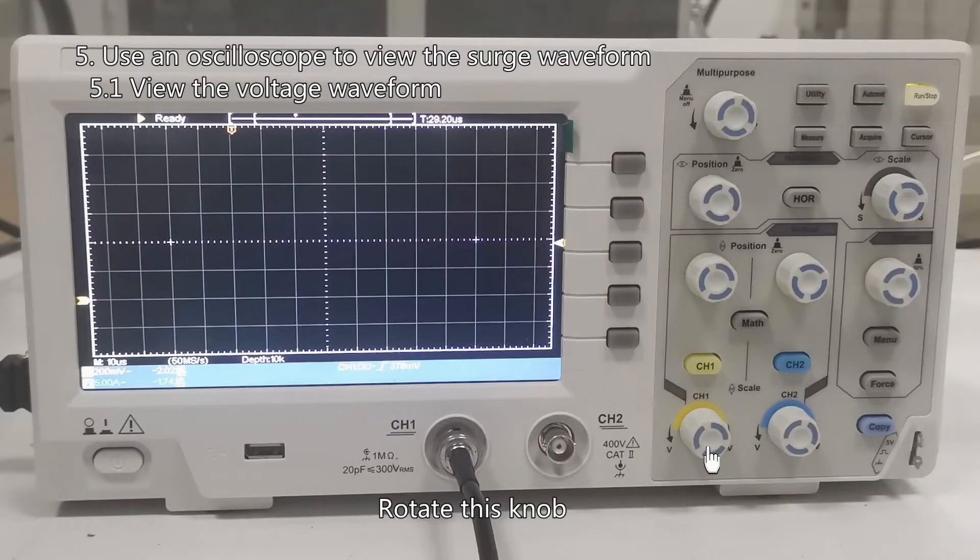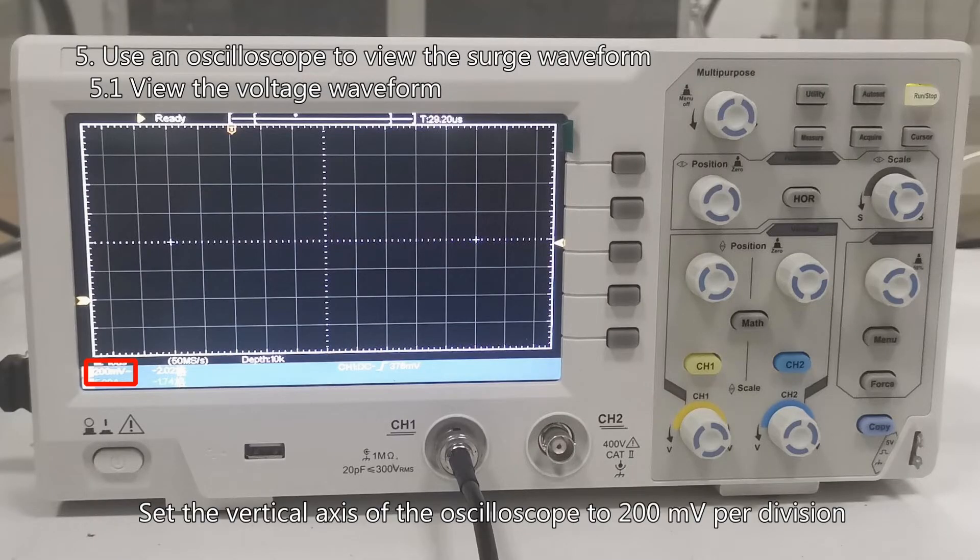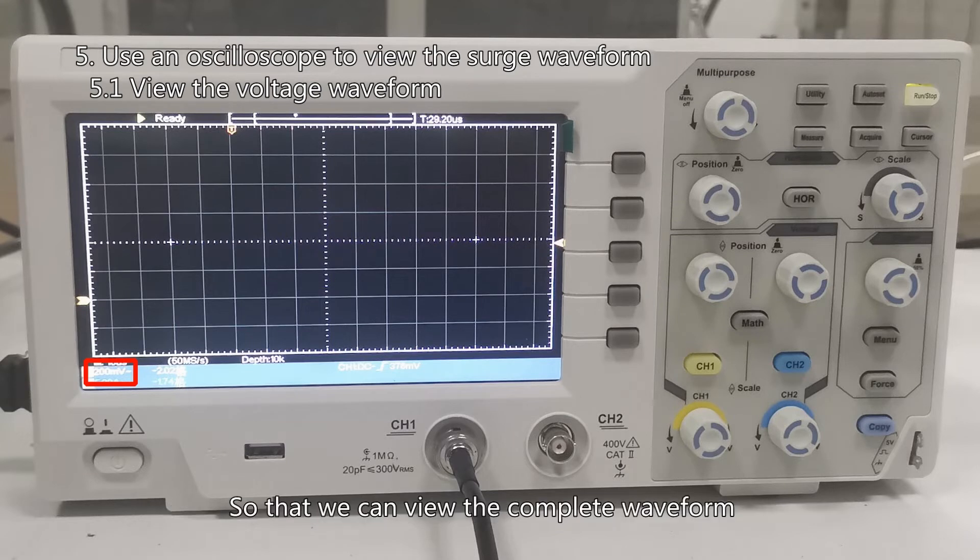Rotate this knob. Set the vertical axis of the oscilloscope to 200 mV per division so that we can view the complete waveform.